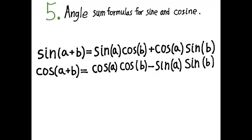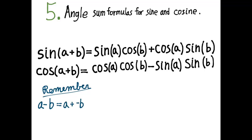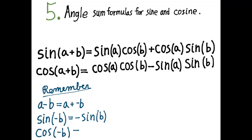There are a couple of corollaries to remember. First, the angle difference formula isn't really a separate formula — just remember that a − b is a + (−b), and then recall how to compute sine of (−b) and cosine of (−b), based on the fact that sine is an odd function and cosine is an even function. The other corollary is the double angle formula: to find sine of 2a, write 2a as a + a and apply the sum formula to get the double angle formulas.